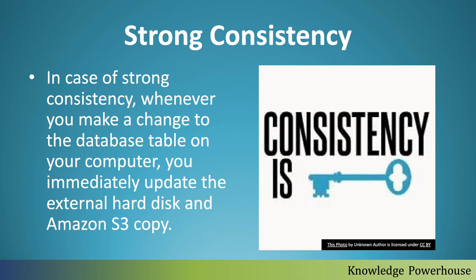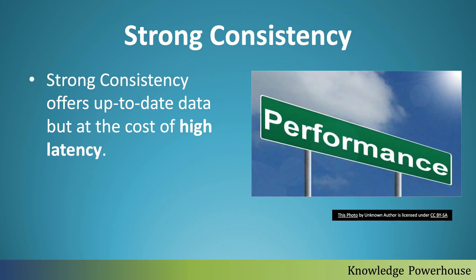If you are building a database system in your own company or project where you have access to multiple replicas and can update them at the same time, you can achieve strong consistency. But strong consistency comes at a cost — it offers up-to-date data in all replicas, but the cost is high latency. A transaction that takes one second might take two or three seconds if you have to update three places simultaneously. So response time increases, performance degrades — you get the benefit but you pay the cost.